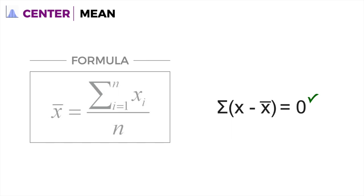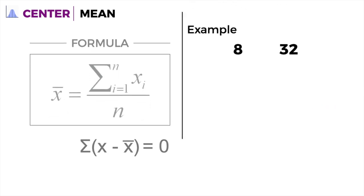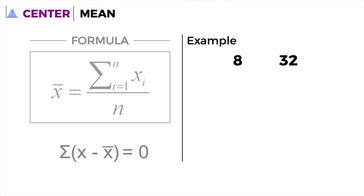For example, we have the numbers 8 and 32, and we want to get the mean. When you add them up and divide by 2, the mean is 20. When you write down the numbers, including the mean, in ascending order, you get 8, 20, and 32.